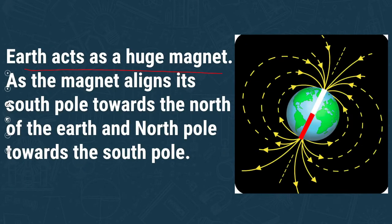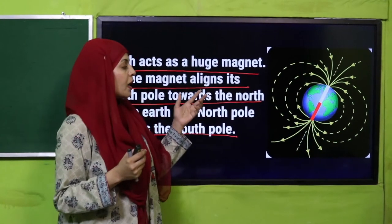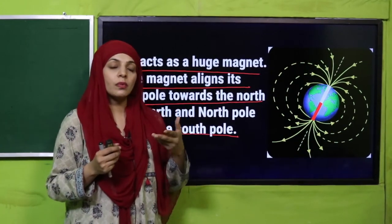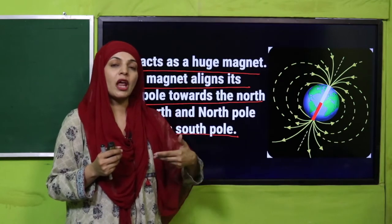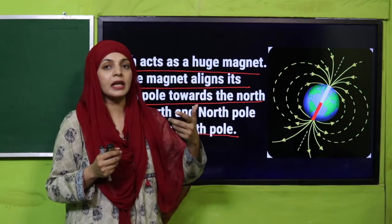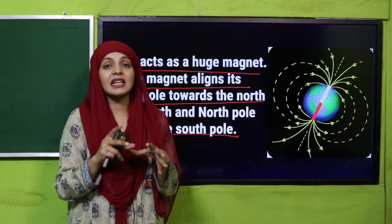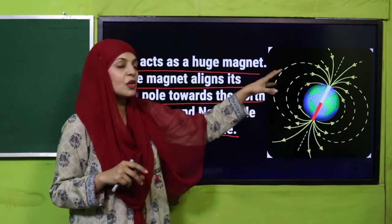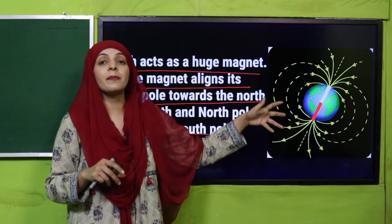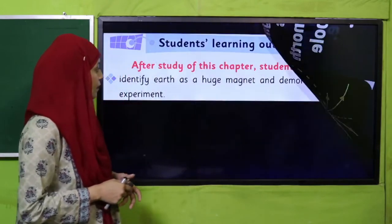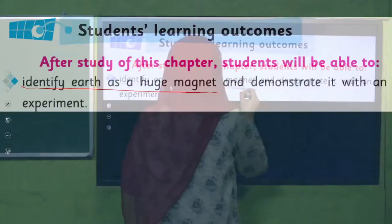The Earth acts as a huge magnet — the magnet aligns its south pole towards the north of the Earth and its north pole towards the south of the Earth. So the north and south of Earth — like poles of the magnet will repel, so the north pole of the magnet will align towards the south of the Earth, because opposite poles attract and similar poles repel. The Earth's magnetic field is exactly like that of a bar magnet, which we also detected using iron filings. Today students will identify the Earth as a huge magnet, demonstrated with an experiment.